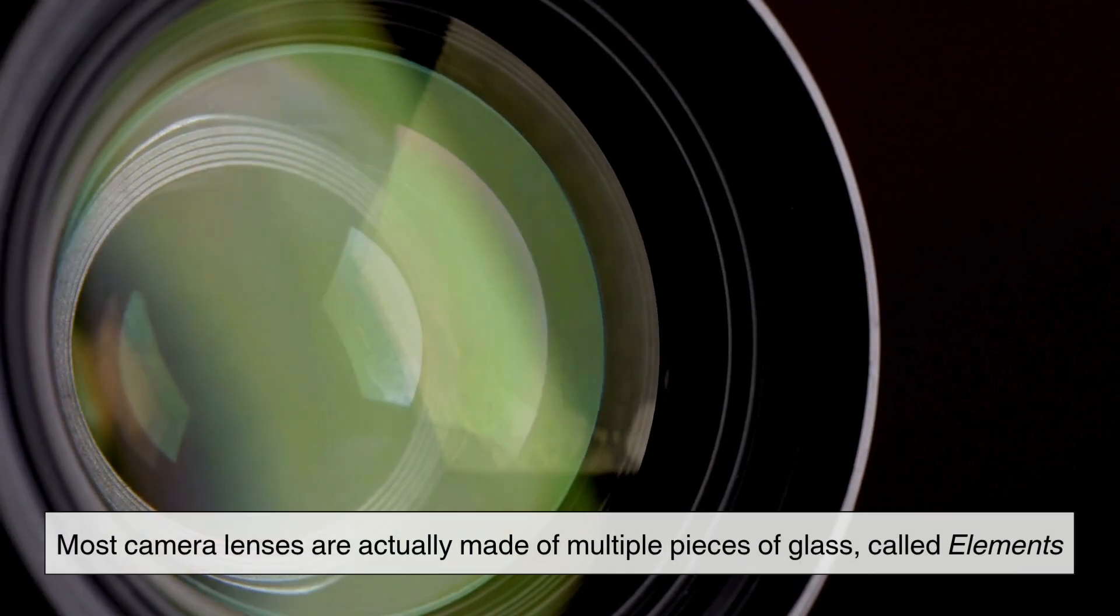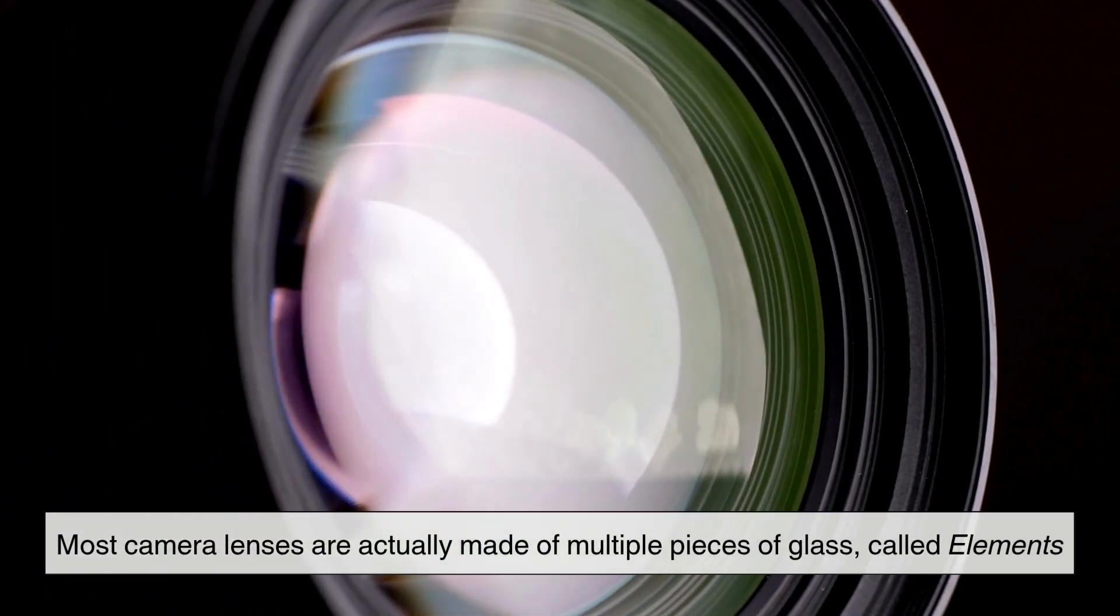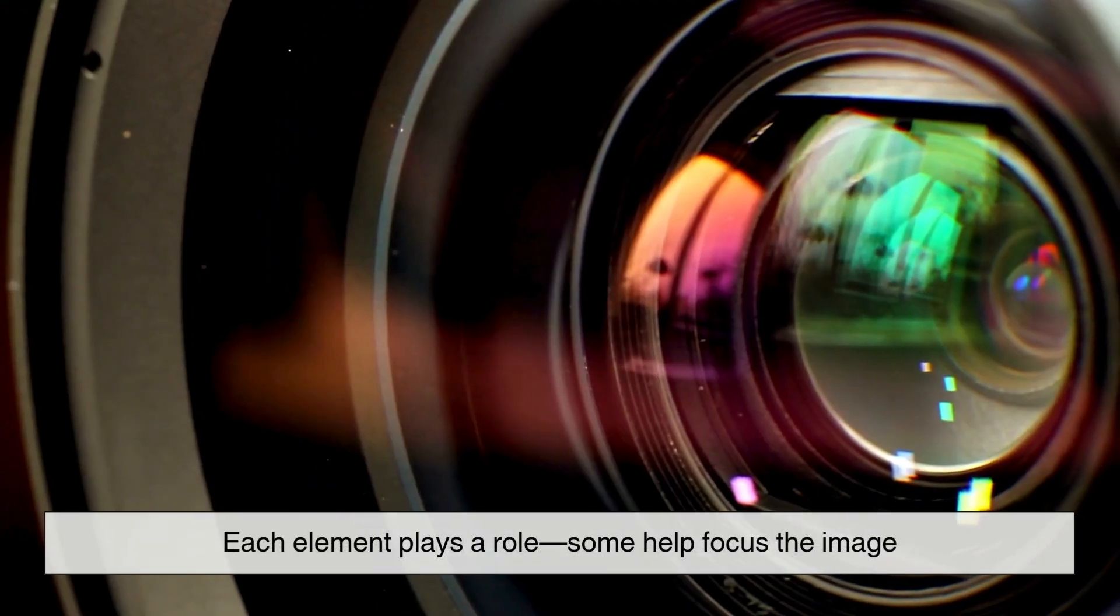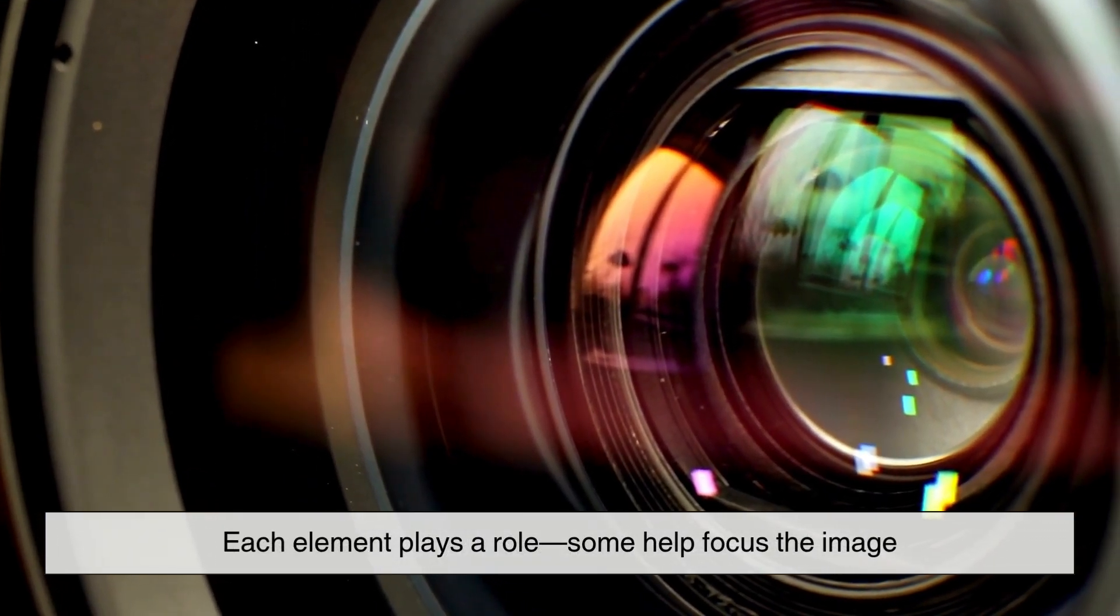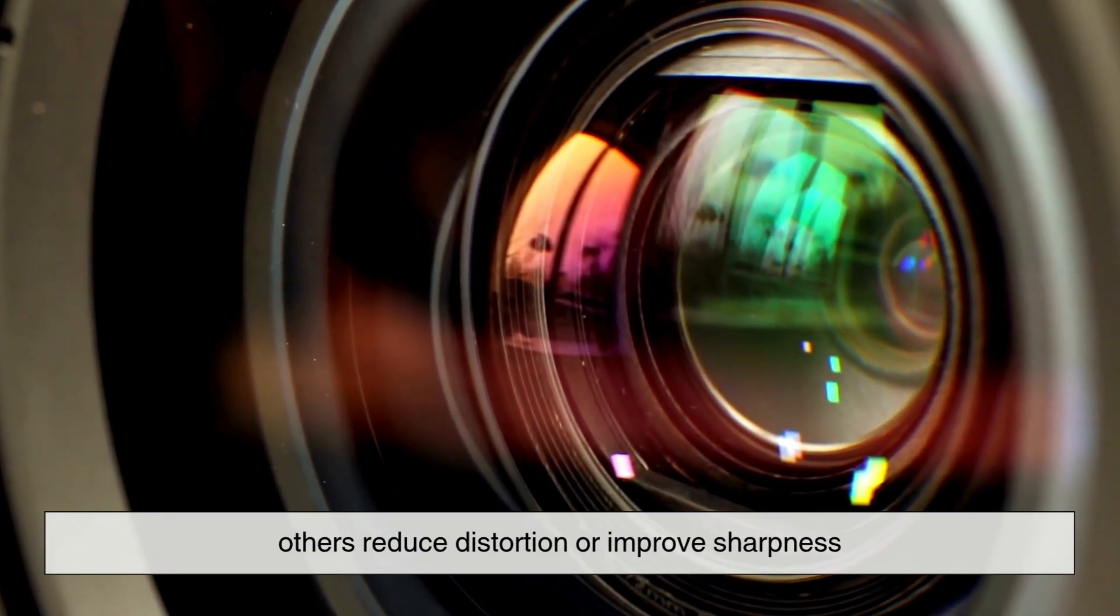Camera lenses are a bit more complicated. Most camera lenses are actually made of multiple pieces of glass called elements. Each element plays a role. Some help focus the image. Others reduce distortion or improve sharpness.